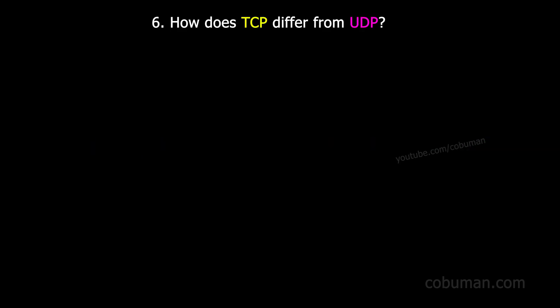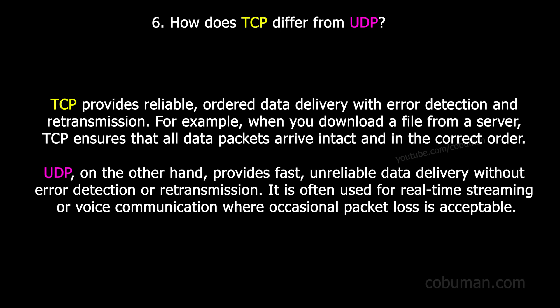Question number six: how does TCP differ from UDP? TCP provides reliable, ordered data delivery with error detection and retransmission. For example, when you download a file from a server, TCP ensures that all data packets arrive intact and in the correct order. UDP on the other hand provides fast, unreliable data delivery without error detection or retransmission, and is often used for real-time streaming or voice communication where occasional packet loss is acceptable.